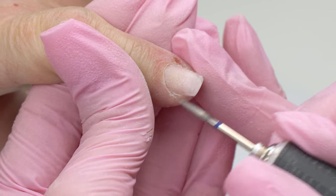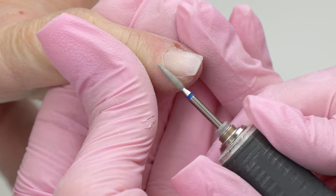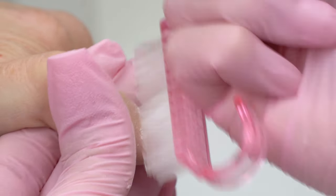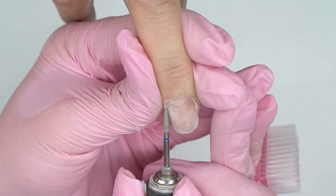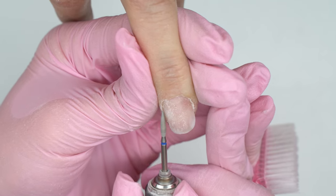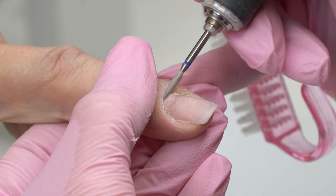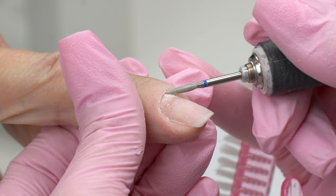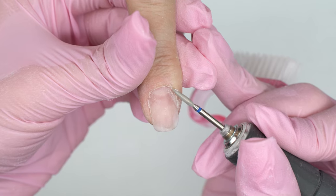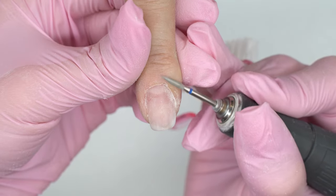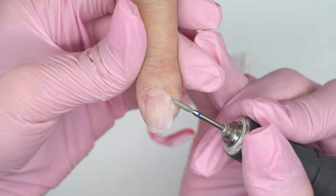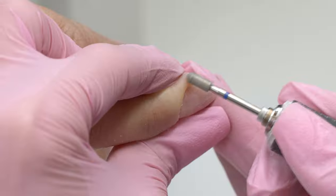When it comes to thin and sensitive cuticles, use a red flame drill bit. As for dry and thick cuticles, use a blue one instead. This is crucial for doing a clean and safe manicure. Using blue drill bits on sensitive skin may result in serious cuts and injuries.